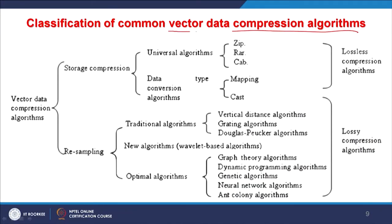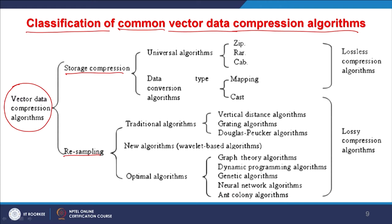In Freeman coding compression, boundaries are stored twice. Now for vector data compression algorithms available so far, the classification is: either they target storage compression or resampling techniques, which also belong to the generalization category.